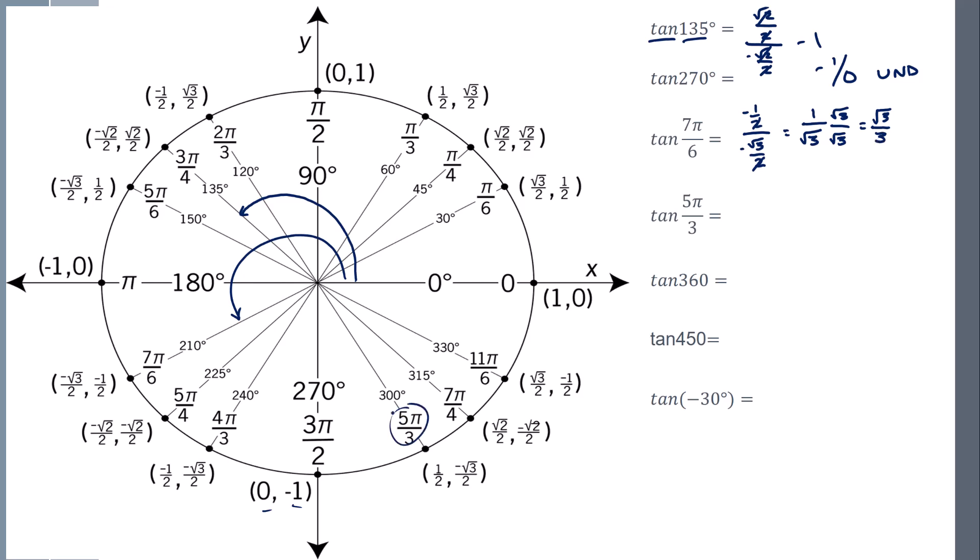Tangent of 5 pi 3, y over x. The 2's cancel out, so I'm just going to get negative root 3.